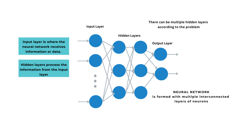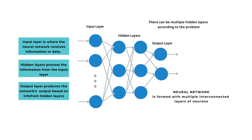The output layer is the final layer of the neural network. It produces the network's prediction or output based on information from the hidden layers. The number of neurons in the output layer depends on the specific task — for instance, in binary classification there might be one output neuron representing the probability of one class, while in multi-class classification there can be multiple output neurons, each representing a different class.